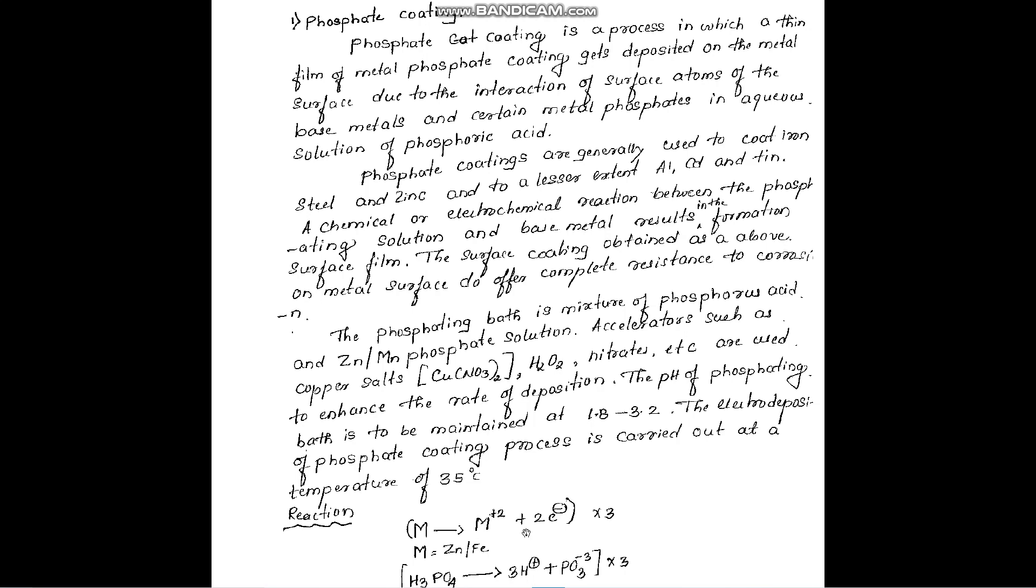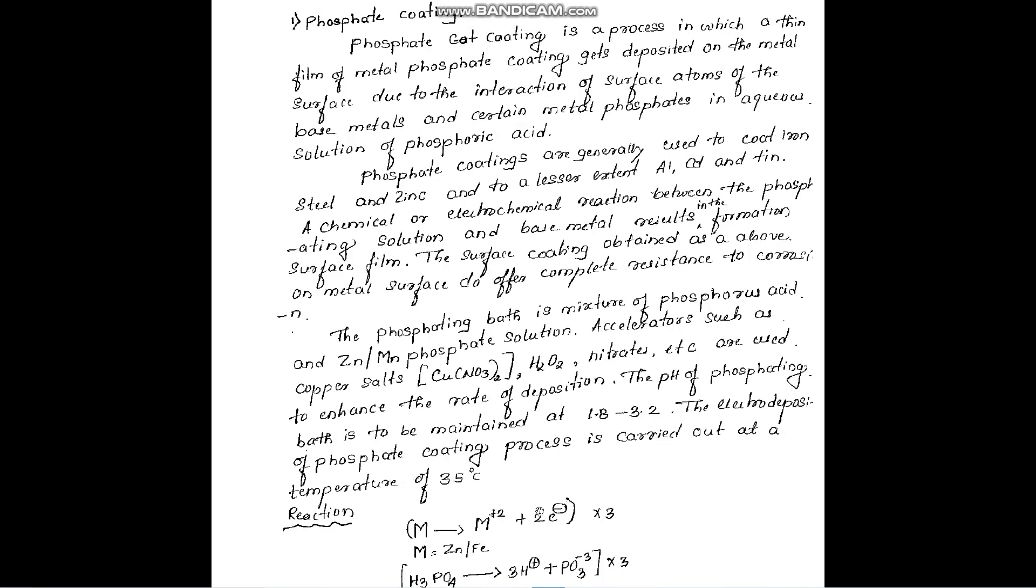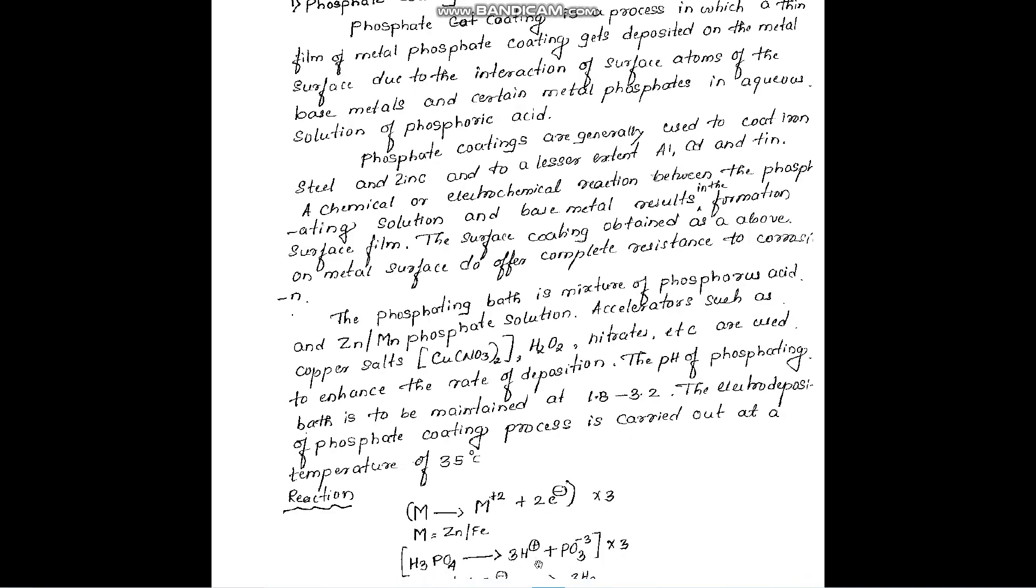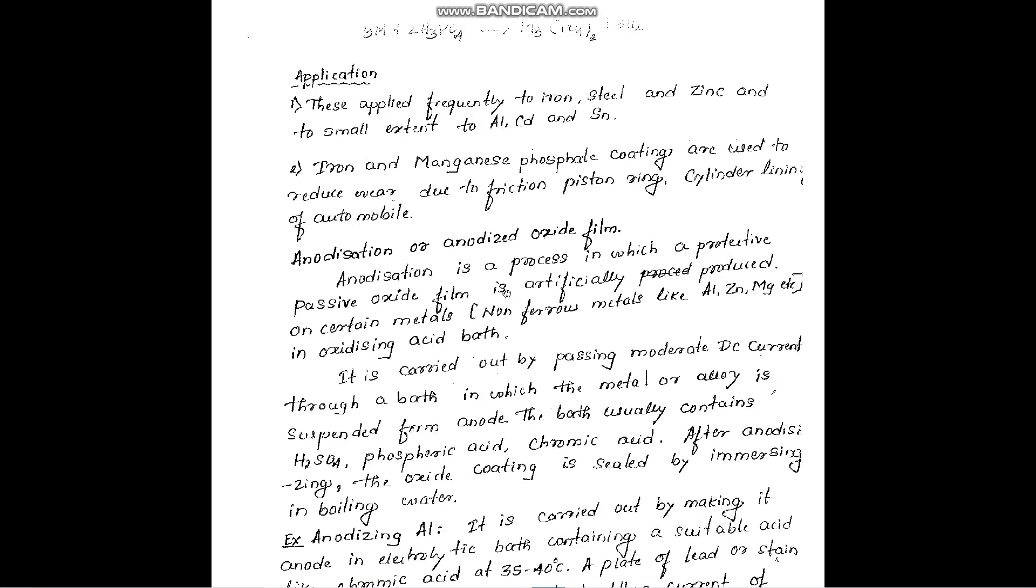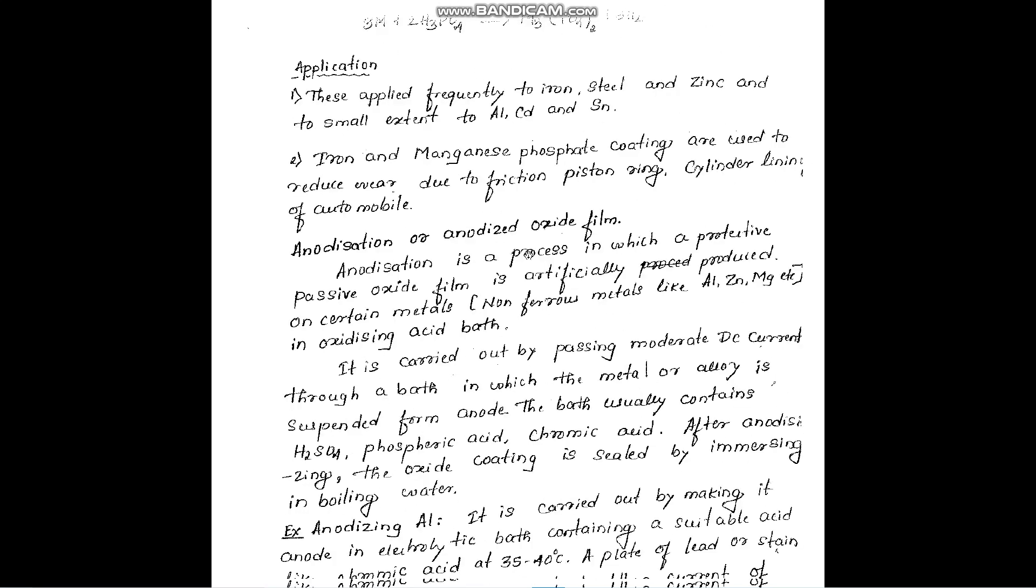Metal will undergo oxidation. The metal is converted into its metal ion. And phosphoric acid will dissolve, producing hydrogen ions and phosphate ions. And these phosphate ions are going to interact with metal ions and convert into metal phosphates.